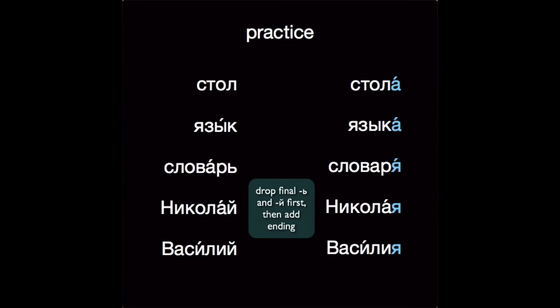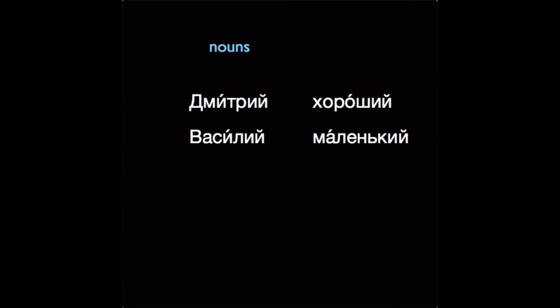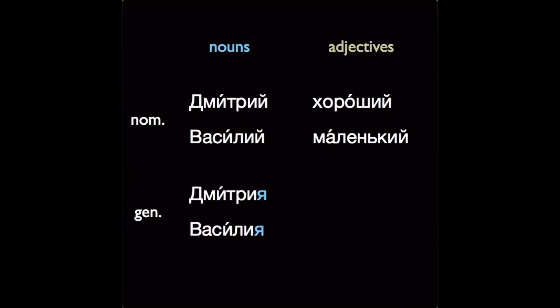By the way, take care with names like Дмитрий, Василий, and some other nouns that end in -ий/-ий. They may remind you of adjectives like хороший, маленький, but keep in mind that they are nouns, so they take noun endings. Хороший and маленький are adjectives. So even if the nominative forms happen to look the same, you will see the difference in other cases: in the genitive, nouns take Дмитрия, Василия, but adjectives take adjective endings like хорошего, маленького.